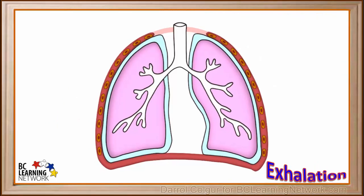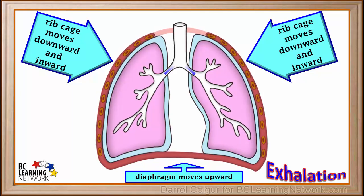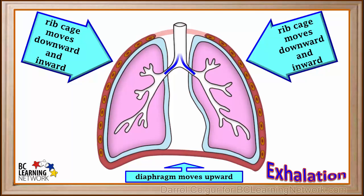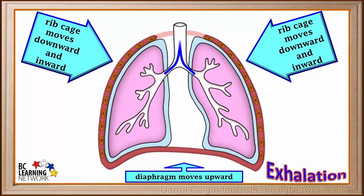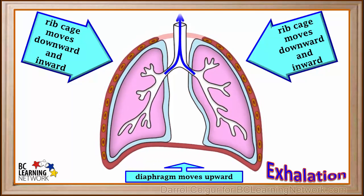So again, we don't have muscles in our lungs. It is when the muscles between our ribs and in our diaphragm relax that the volume of the chest cavity is decreased and air is pushed out.